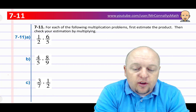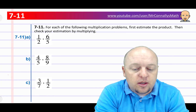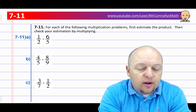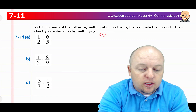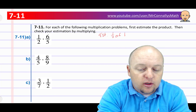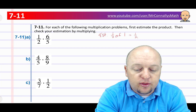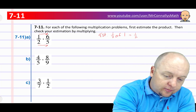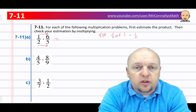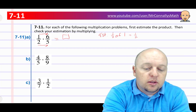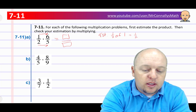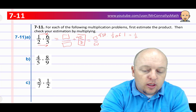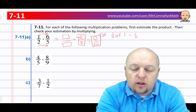Question 7.11: Check each multiplication problem — first estimate the product, then check your estimation by multiplying. Part A is one half times 6 fifths. 6 fifths is almost one whole, so we're looking for almost half of one whole, which is about one half. To multiply fractions, we multiply numerators by numerators and denominators by denominators: 1 times 6 is 6, 2 times 5 is 10. They do have a common factor — we can divide by 2 over 2 using a giant 1. That answer you can compare to our guess of one half.